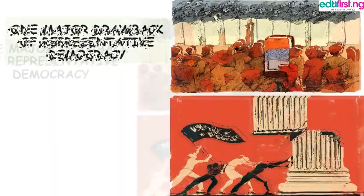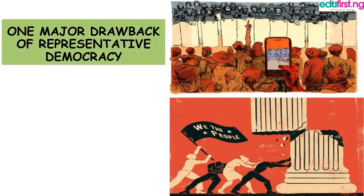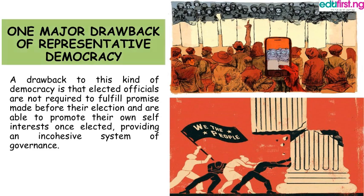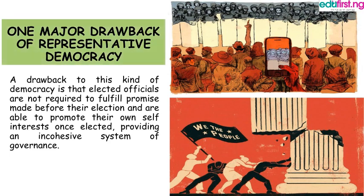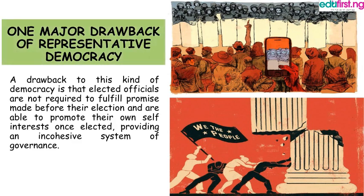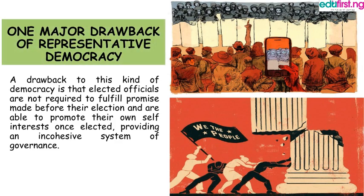One major drawback of representative democracy is that elected officials are not required to fulfill promises made before their election and are able to promote their own self-interest once elected, providing an incoherent system of government.